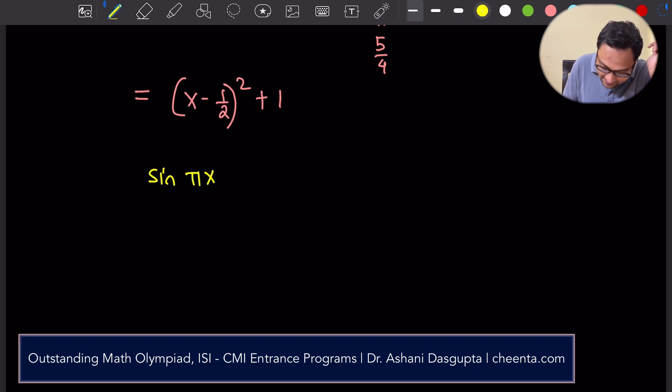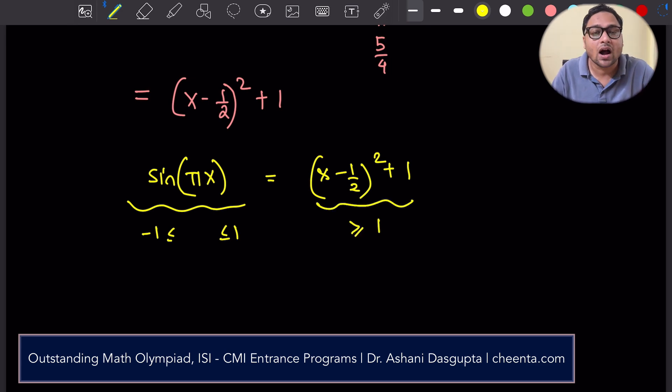Sine of pi x is equal to x minus half whole square plus 1. This side is between minus 1 and plus 1. This side is always greater than or equal to 1. So you see that there is a possibility of overlap. And that overlap happens when the left-hand side and the right-hand side is equal to 1. So let's look at the right-hand side. It's equal to 1 when x is equal to 1 when x is equal to half.